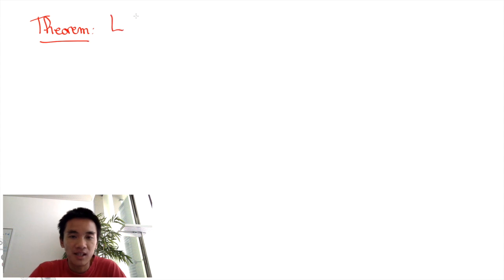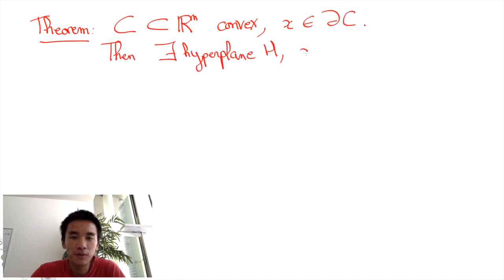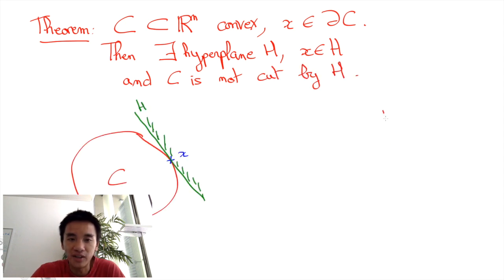Consider a convex set C in Rn and a point x on the boundary of C. Then, there exists a hyperplane H that goes through x and such that C is entirely inside one of the closed half-spaces constructed by H.